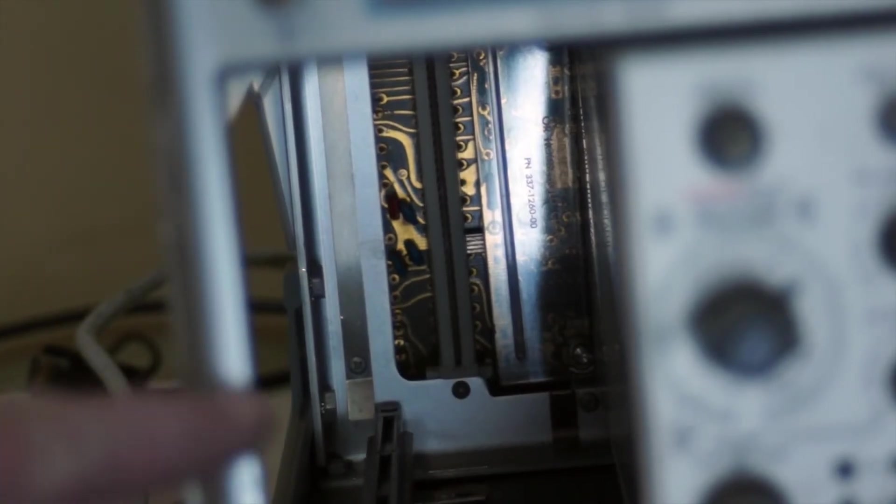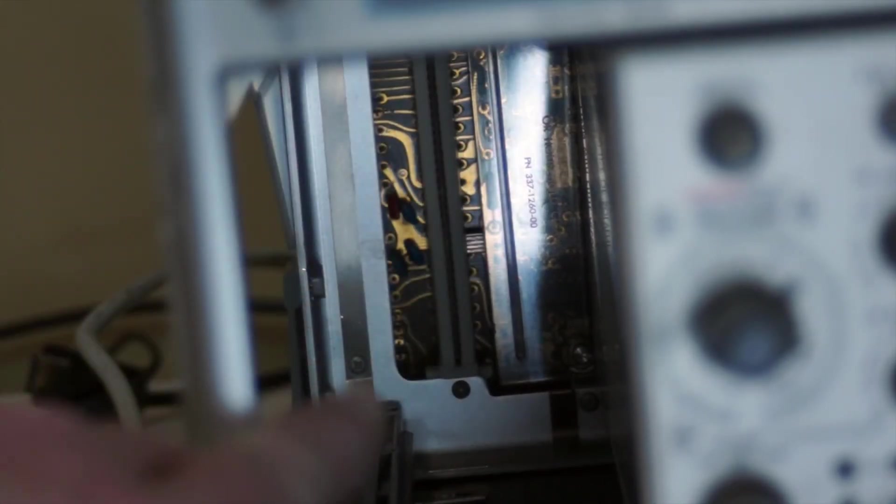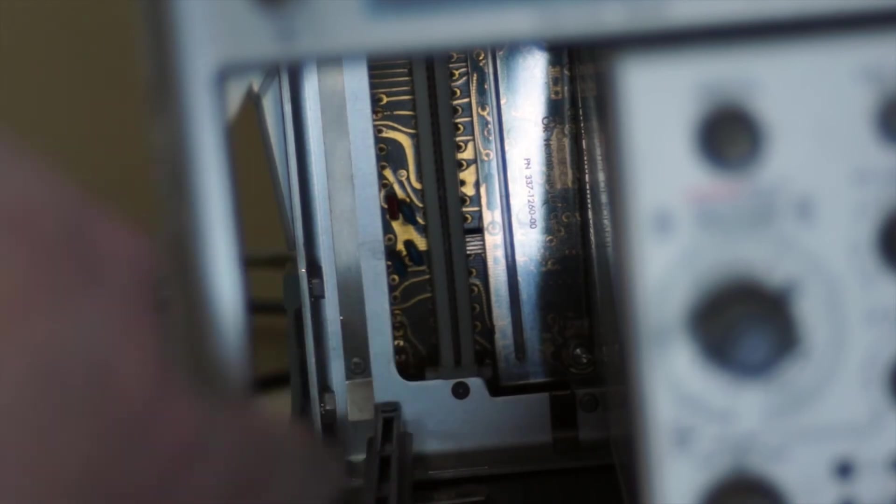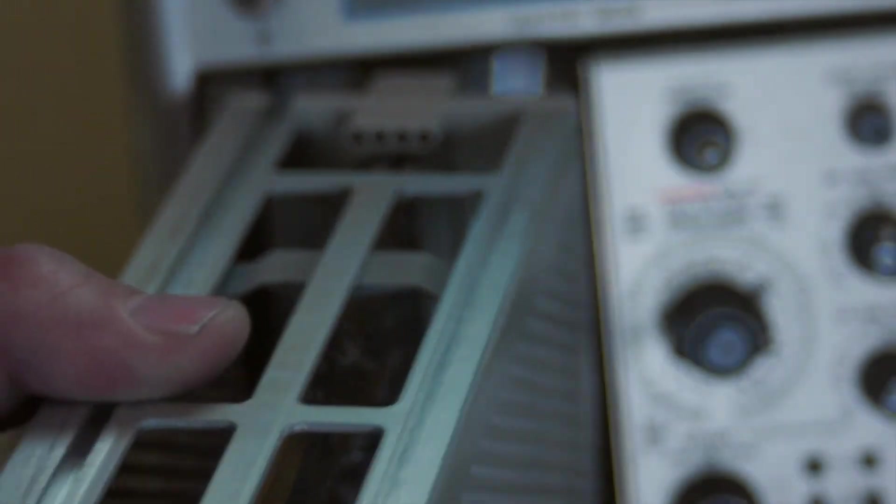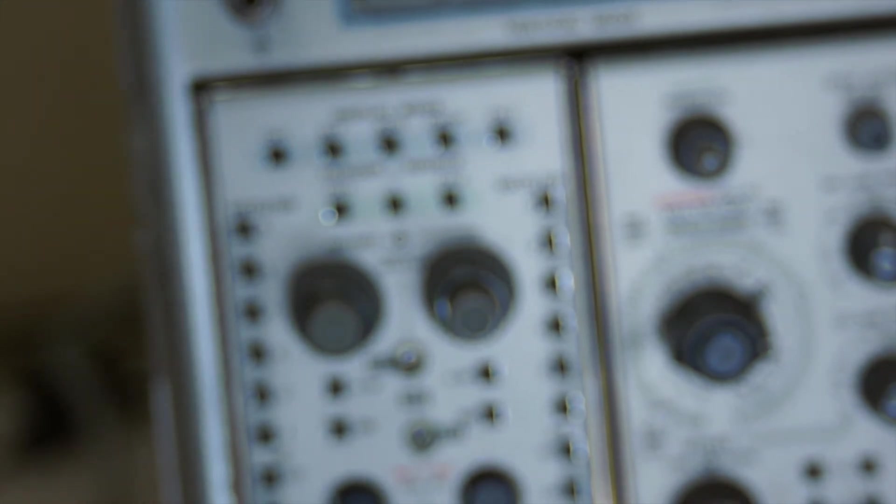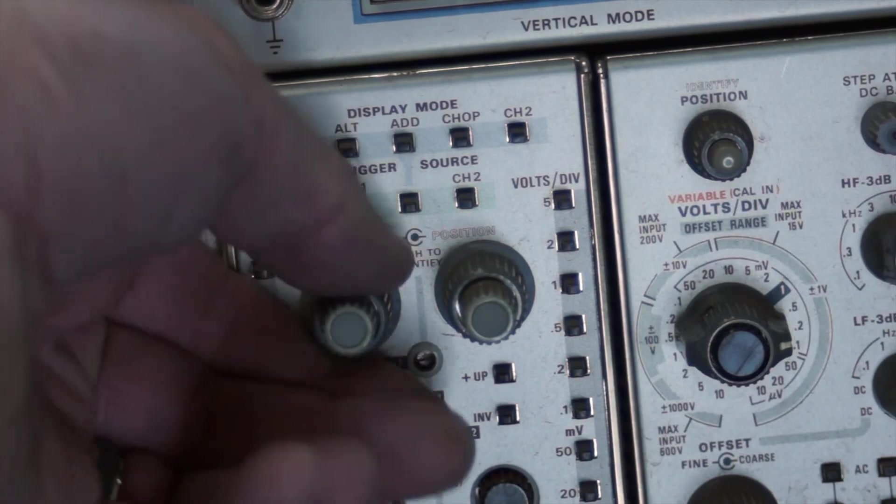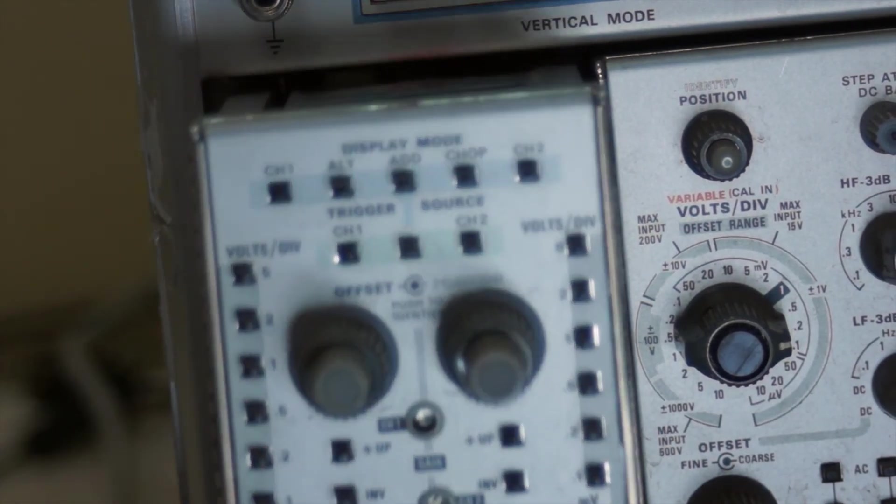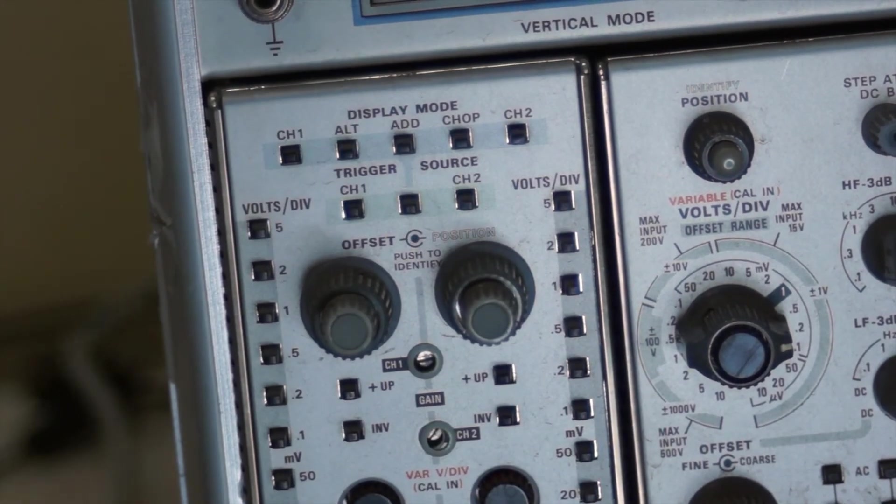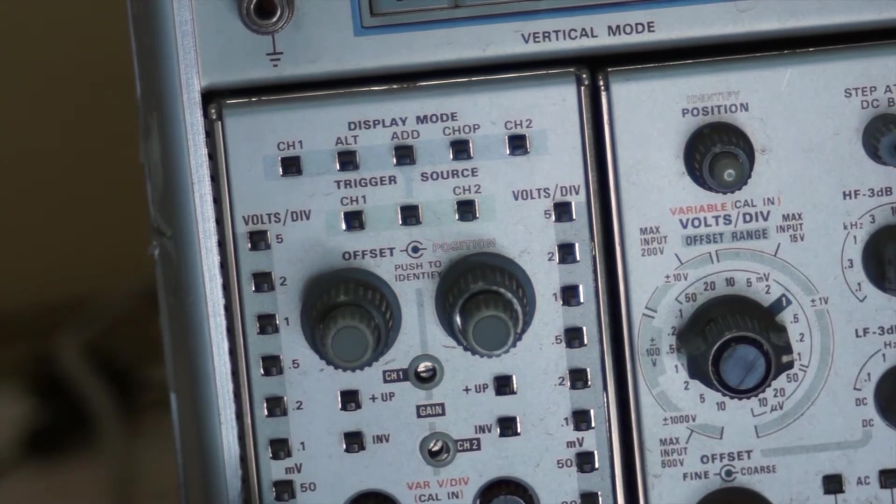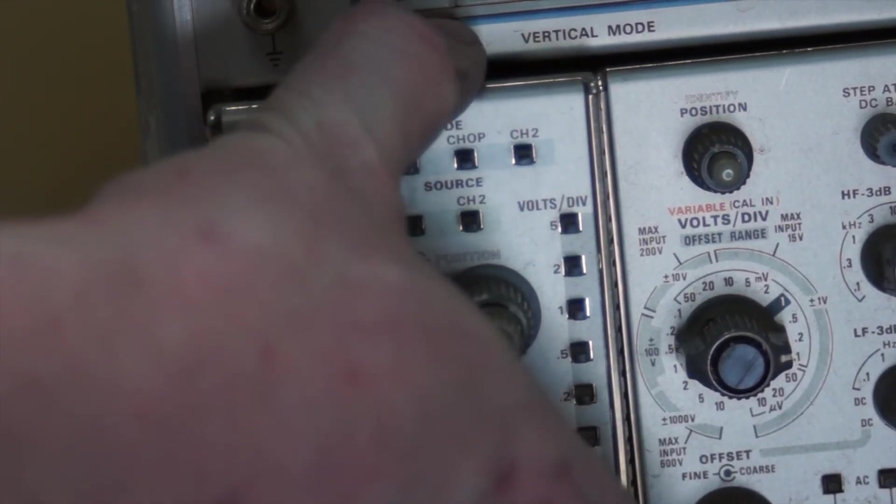You can see at the very back there's a white card edge connector. On this side we've got a card edge that the module plugs into. It just slides in there. This is a pretty revolutionary concept for the era to have these modular sorts of plug-ins. If you're a big fan of 60s cinema, this kind of reminds me of the memory modules in 2001 Space Odyssey.